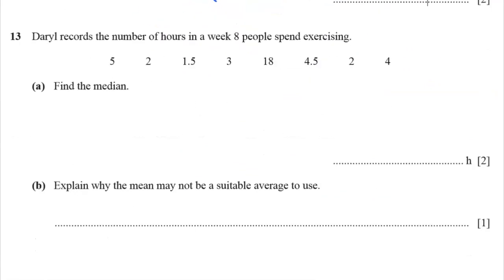Daryl records the number of hours in a week. Eight people spent exercising. Find the median. The median is the middle number. The key always to finding the middle number is to put everything in order. 1.5 and then 2, 2, and then 3 and then 4 and then 4.5 and then 5 and then 18. Okay, where's the middle number? We've got 1, 2, 3, 4, 5, 6, 7, 8. All right. Well, that means if we cut it in 4, 4, that's the middle right there. The middle number is halfway between 3 and 4. So let's say it's 3 plus 4 divided by 2, which is 3.5.